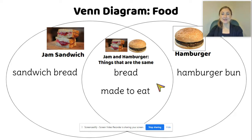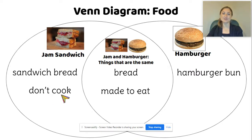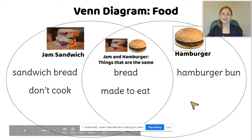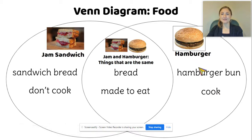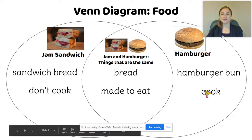Now let's think about the way that they're made, and what are the differences? A jam sandwich is something that you don't cook — usually you eat the jam sandwich cold. And what about a hamburger? Over here I typed the word "cook," because usually we eat a hamburger warm. This is special for the jam sandwich, that's why it goes on this side. This is special for the hamburger, and that's why it goes on this side.